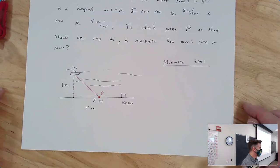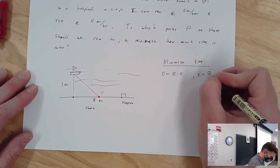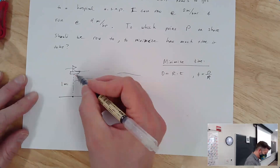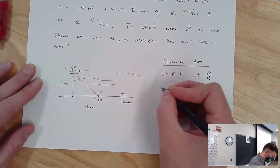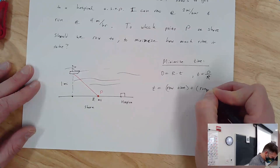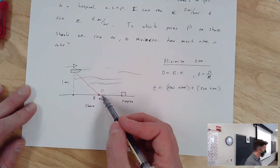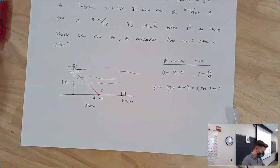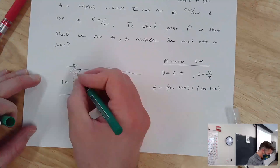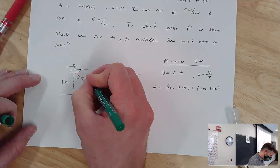Time equals distance divided by rate. There's going to be two times: the row time and the run time. Total time equals row time plus run time. I'm going to call the horizontal distance from the closest shore point to where we land x. Then the rowing distance is the square root of x squared plus 1, by the Pythagorean theorem. The run distance along shore is 4 minus x.